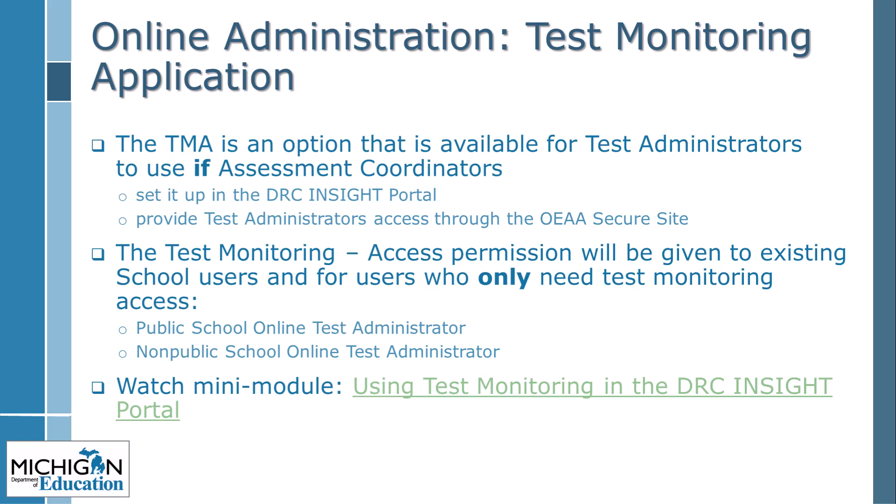The test monitoring application allows the user to view student progress through the test during administration. This application must be set up in the DRC Insight Portal when test sessions are set up. Any test administrator who will access it during testing must have secure access to the DRC Insight Portal. The secure site roles of Public School Online Test Administrator and Non-Public School Online Test Administrator will provide access only to the test monitoring application. Detailed information is available in the DRC Insight Portal User Guide, the M-STEP Test Administration Manual, and the Using Test Monitoring in the DRC Insight Portal Mini Module.